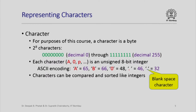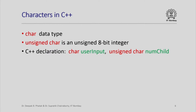Since characters are represented as unsigned 8-bit integers, it is not surprising that characters can be compared with each other and also sorted like integers. In C++ the corresponding data type is denoted by the keyword char, or unsigned char, which really means an unsigned 8-bit integer — so you can also do integer operations on very small unsigned integer values like addition or multiplication.